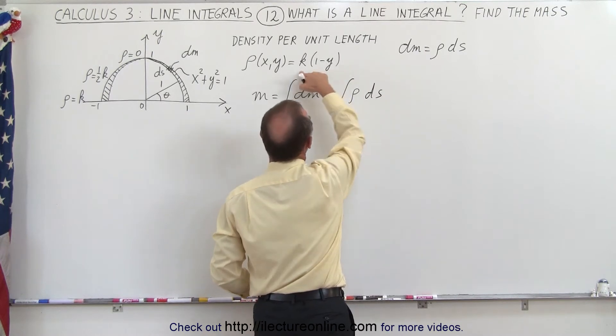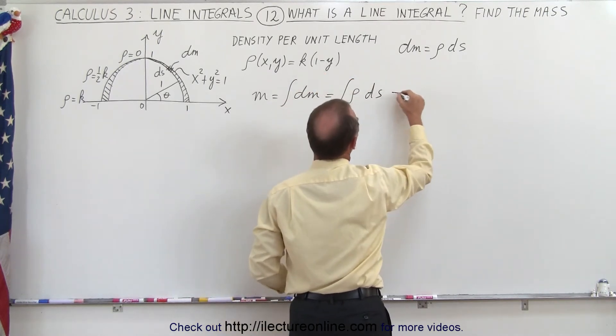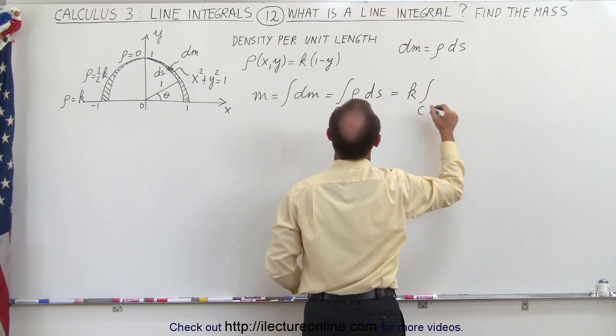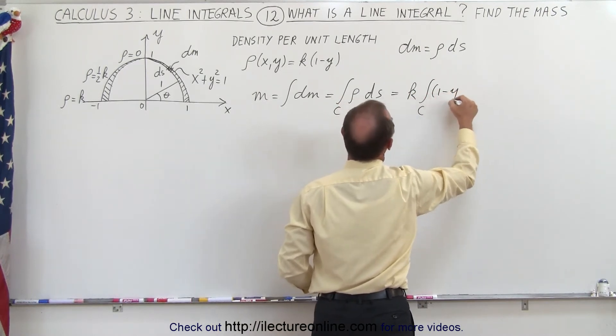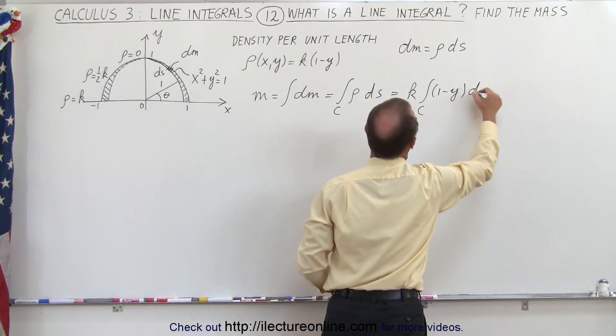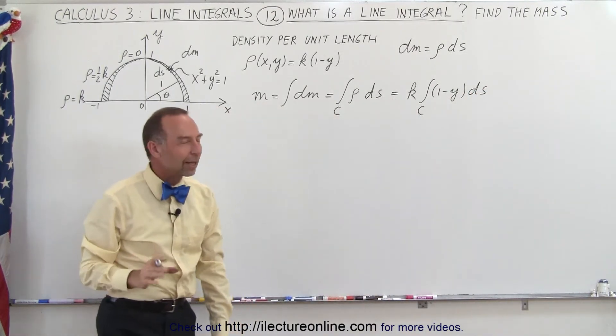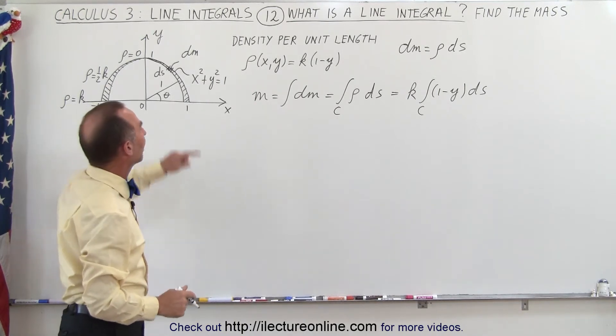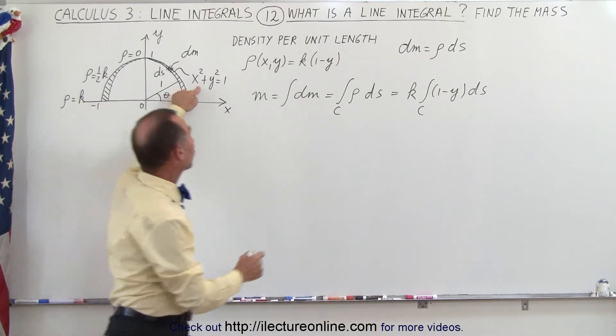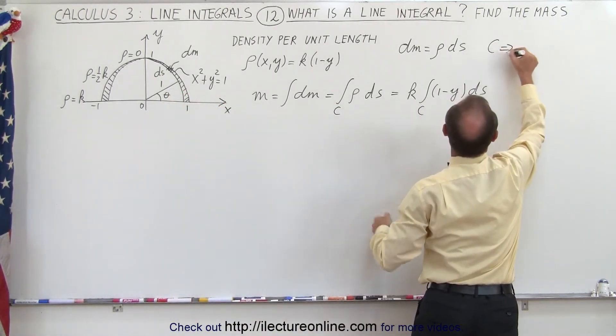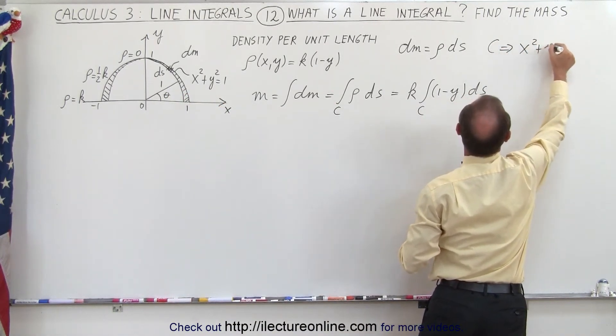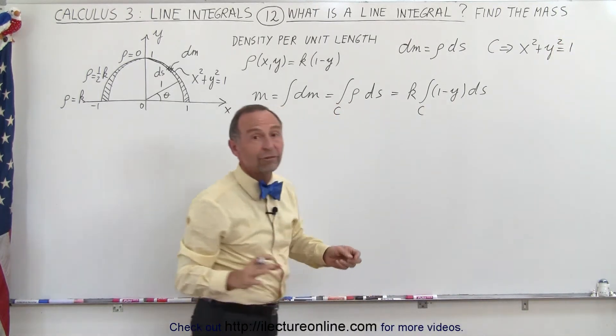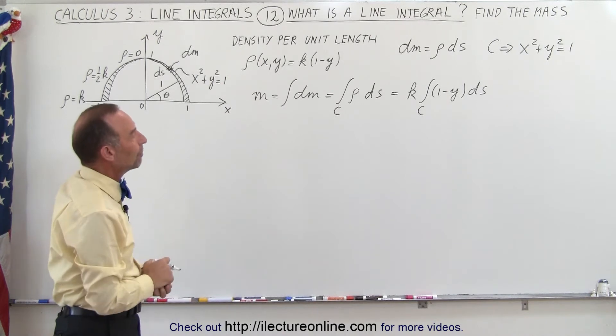And the density, of course, is defined as this function right here. So this is going to be equal to k times the integral about the curve of 1 minus y times ds. So now that begins to look familiar, because that looks pretty well what we've seen before. And of course, the curve that we're going to use right here can be found by taking the equation x squared plus y squared equals 1. And so now this looks very familiar. Yes, this looks like a line integral format.